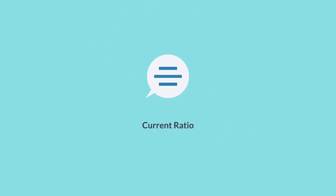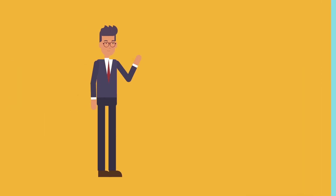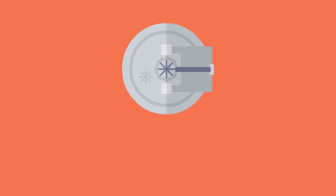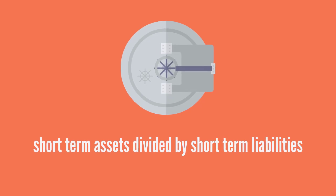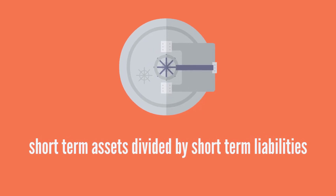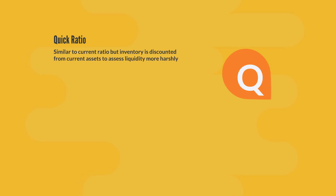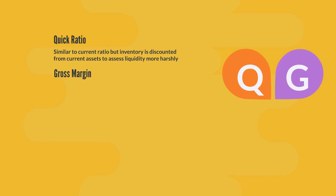Current ratio: a liquidity ratio that measures a company's ability to pay its short-term obligations with its short-term assets — short-term assets divided by short-term liabilities. Quick ratio: similar to the current ratio, but inventory is discounted from current assets to assess liquidity more harshly.